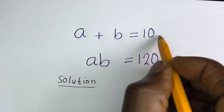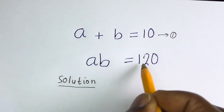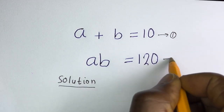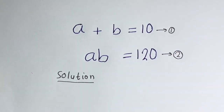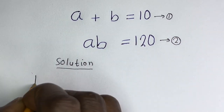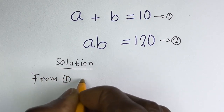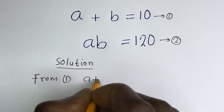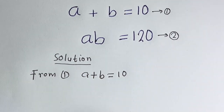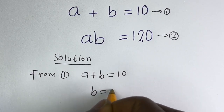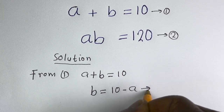A plus B is equal to 10 — let's call this equation 1. AB is equal to 120 — let's call this equation 2. From equation 1, A plus B is equal to 10, so B is equal to 10 minus A. Let's call this equation 3.